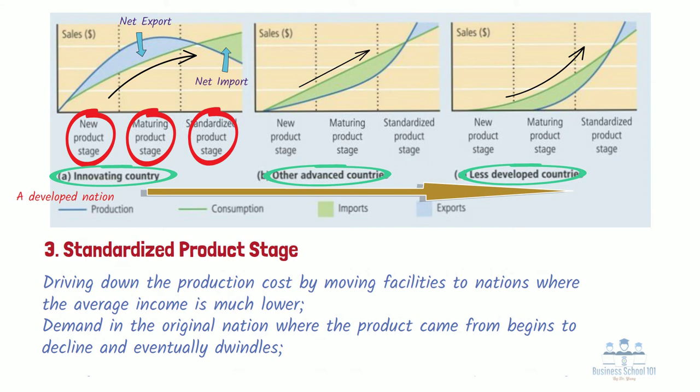What is left of the market share is divided up between predominantly foreign competitors, and people in the original country who want the product at this point will most likely buy an imported version from a nation where the incomes are lower. Meanwhile, developed countries are investing in and innovating new technologies with new products, and then another new cycle starts.